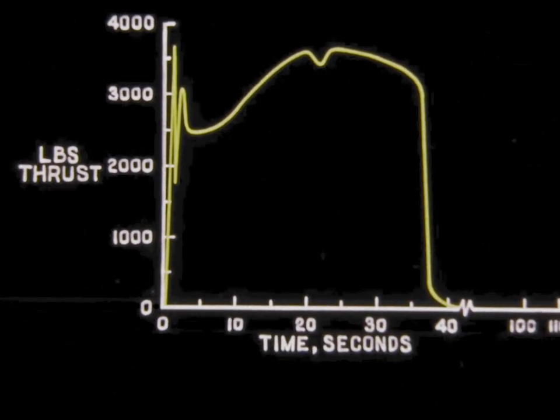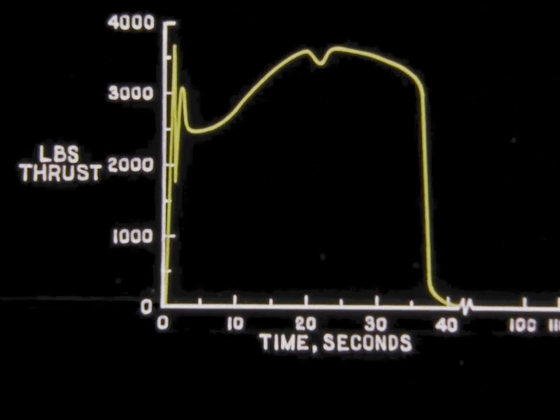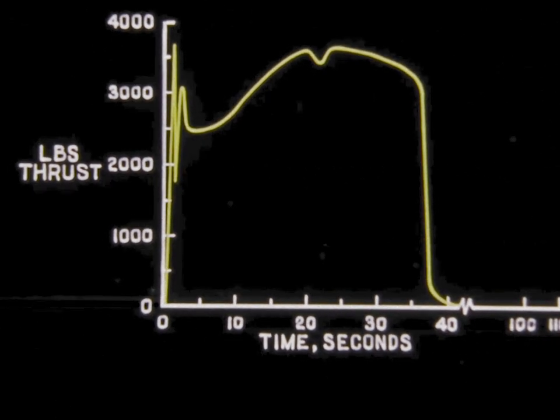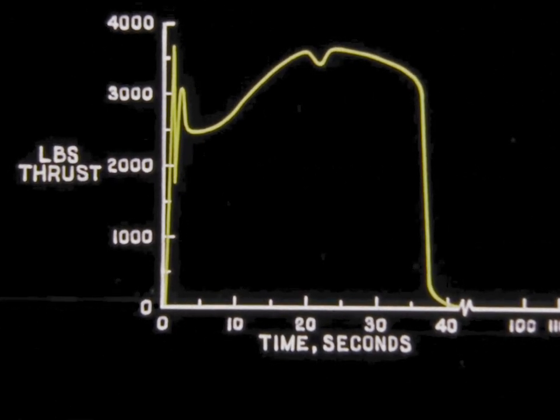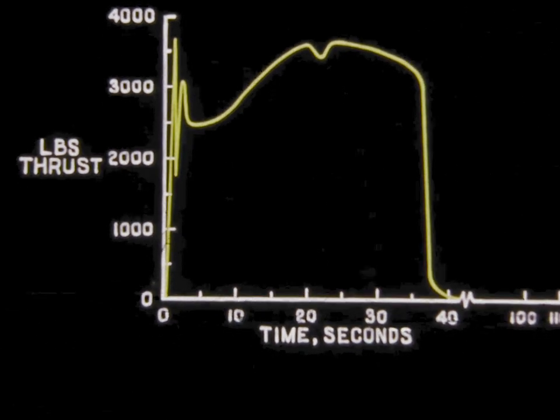This typical plot for one type motor shows the buildup to the 3,000 pound thrust level, and the drop-off as the motor nears cutoff at about 40 seconds.